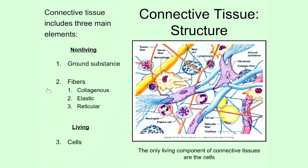The only living component of connective tissues is cells, which are interspersed throughout it. If you look at the different cells, you'll notice they're of different shapes and sizes because they are different kinds of cells. Some connective tissues have many different kinds of cells within them. Other connective tissues, such as fat — which is a connective tissue — have predominantly a single cell type. The cells make up the only living component of connective tissues.